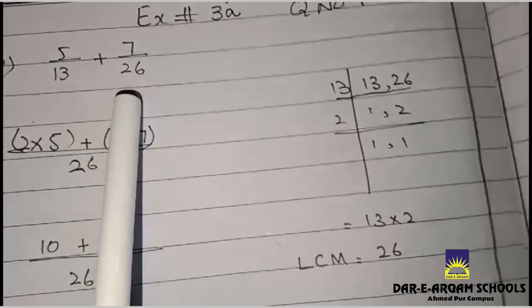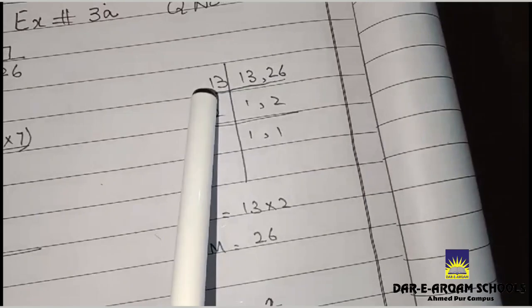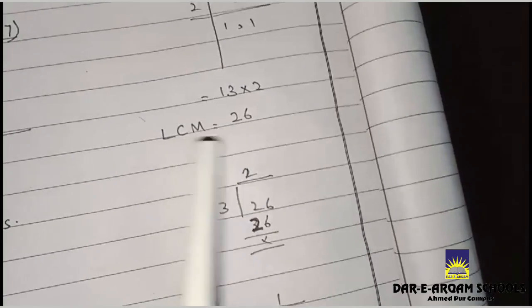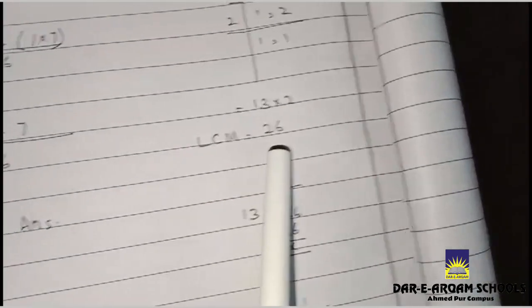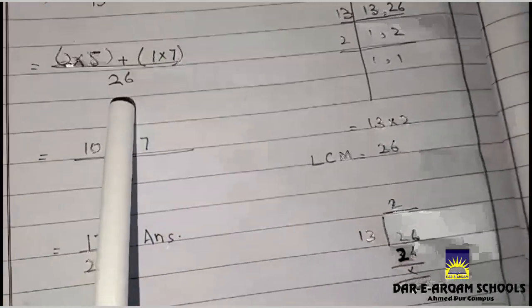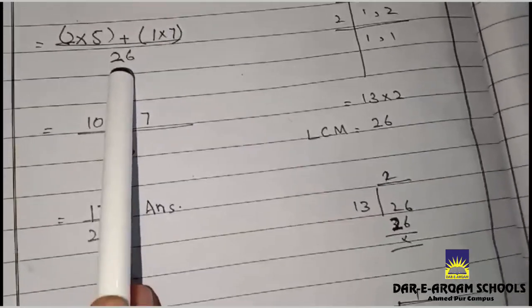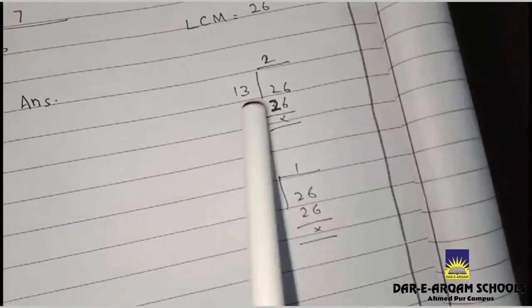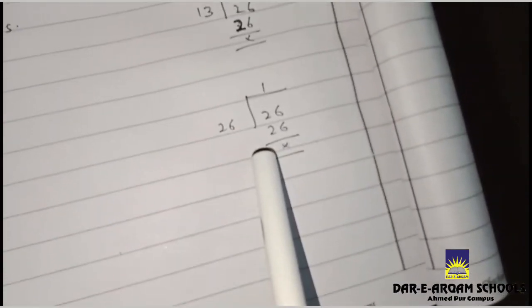13 and 26. 13 ones are 13, 13 twos are 26, 2 ones are 2, 13 twos are 26. The LCM is 26. We have divided two times, one times 13 and one times 26. 13 twos are 26 and 26 ones are 26.